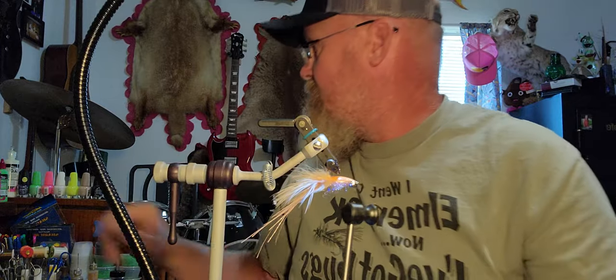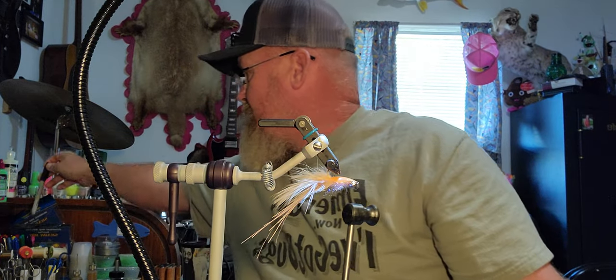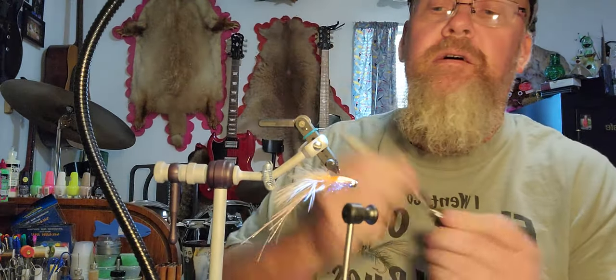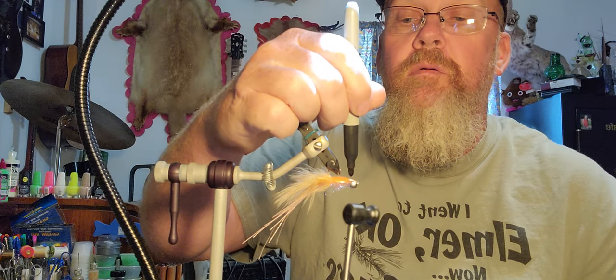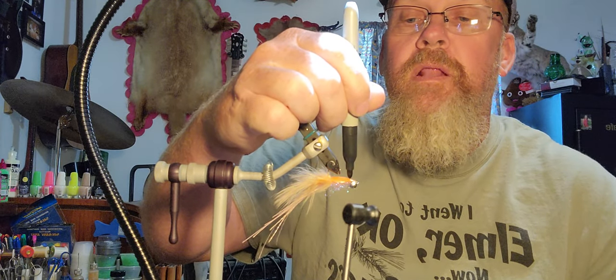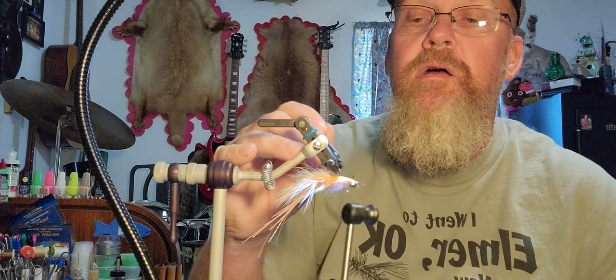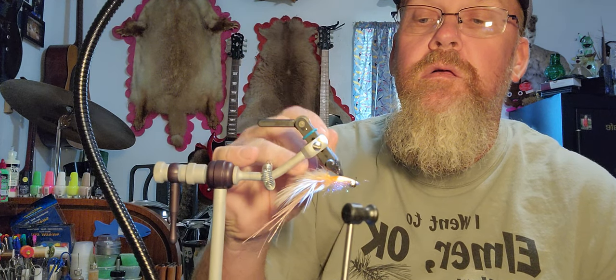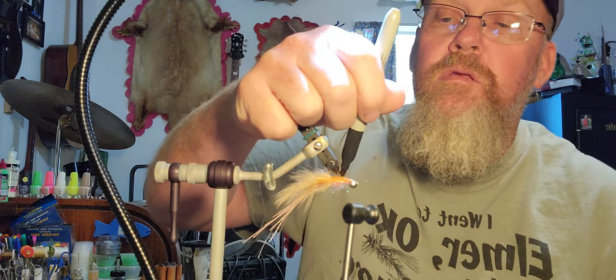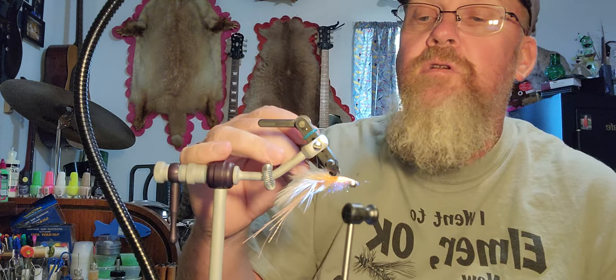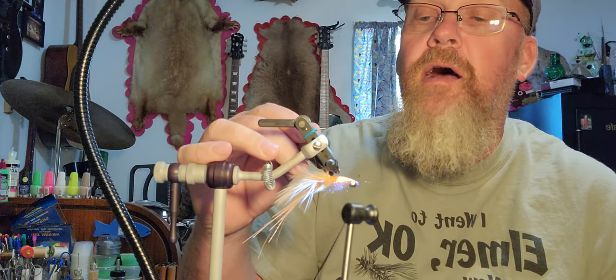Once I get that done, what I do is I'll take a sharpie marker and I'll just kind of make a little dot like ribs. I don't draw complete lines, I just make the dots.